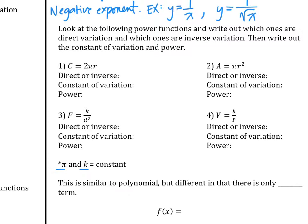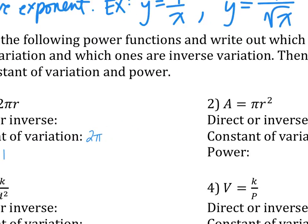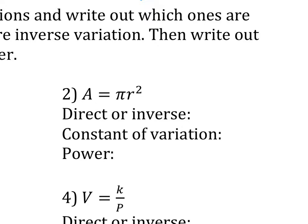Let's start with Alana. Number one — is this direct variation or inverse variation? Good. Junior, what is the constant of variation? Along with pi, there's another number — two pi. Okay. Allison, what is the power? One — yes. Aaron, number two — is this direct or inverse variation? Uh-huh. Eunice, what is the constant of variation? Yes. And then Mark, what is the power?